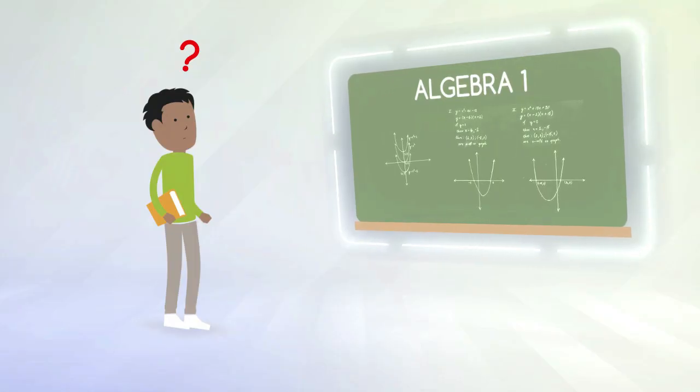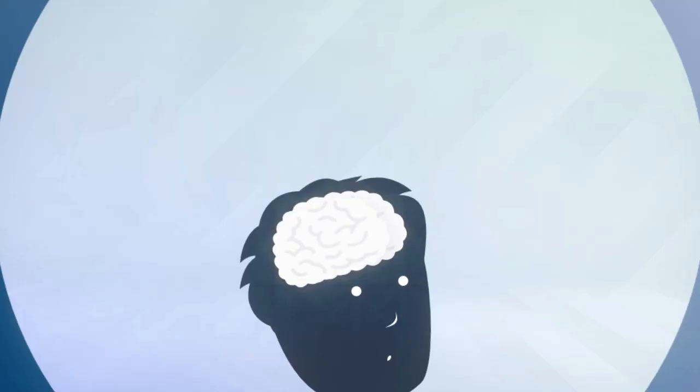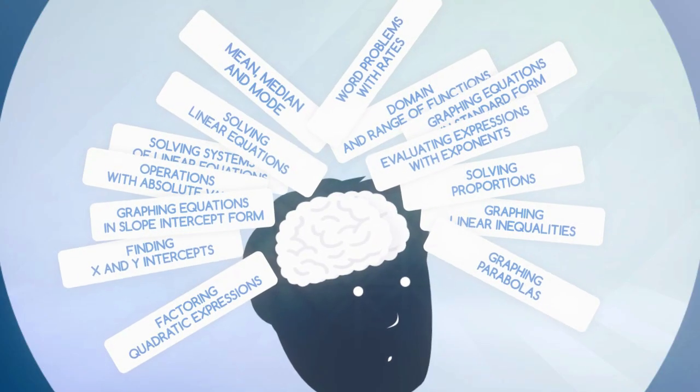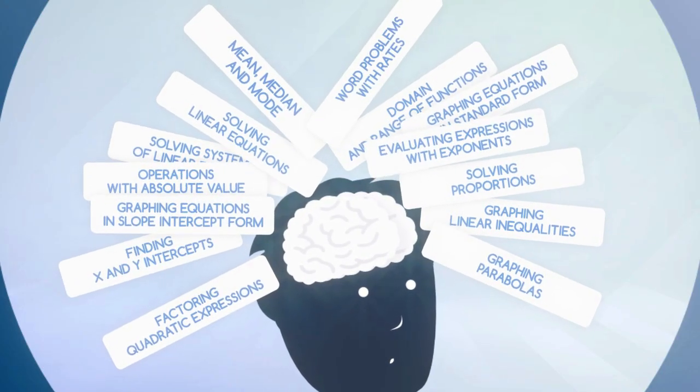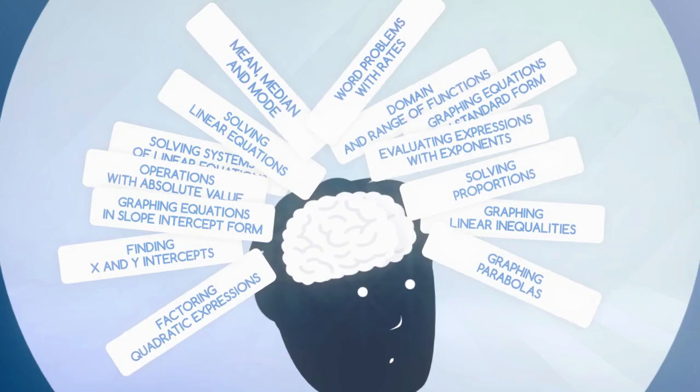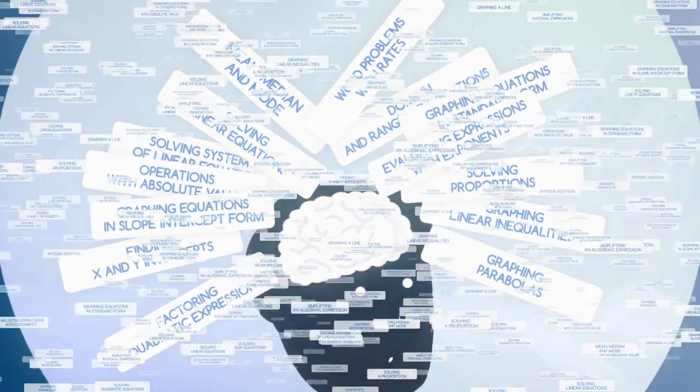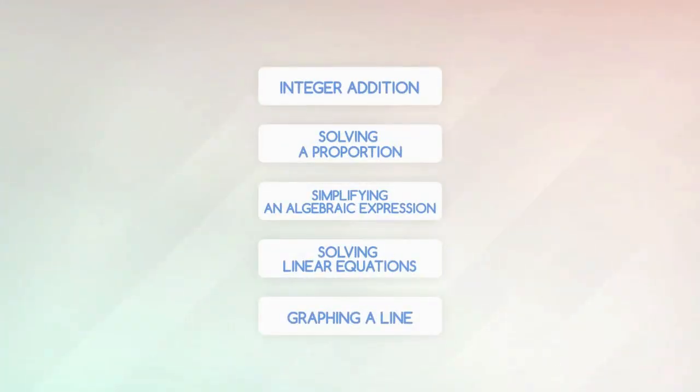The first thing Alex needs to do is determine Sam's knowledge state. Sam's knowledge state is everything he already knows in Algebra 1. To get a basic understanding of what goes into computing a knowledge state, let's pretend that instead of consisting of several hundreds of topics, Algebra 1 only consisted of 5 topics.